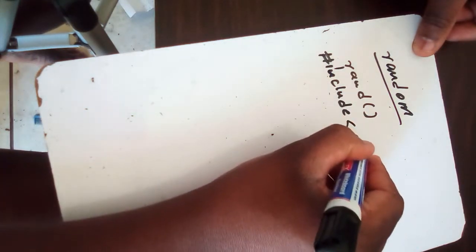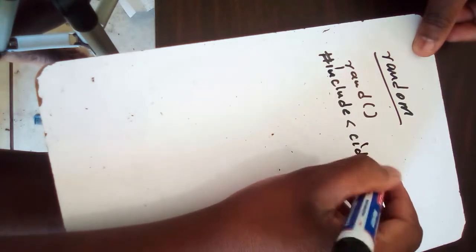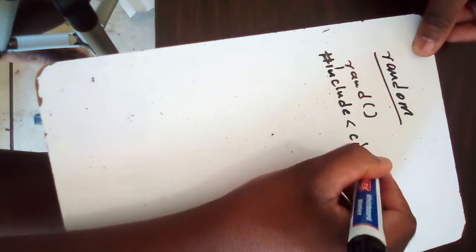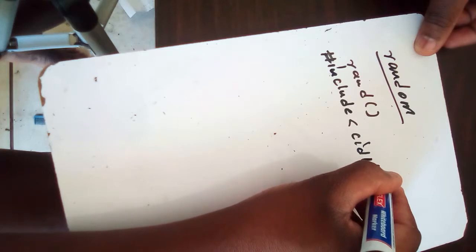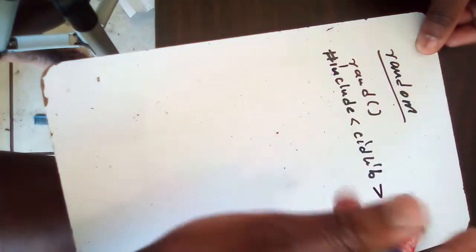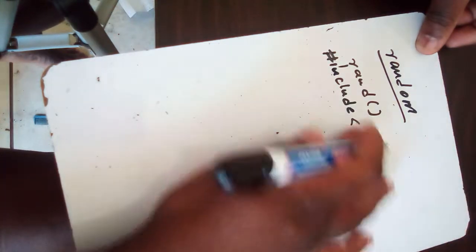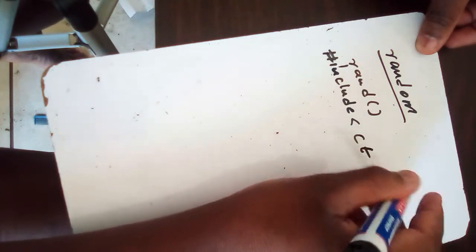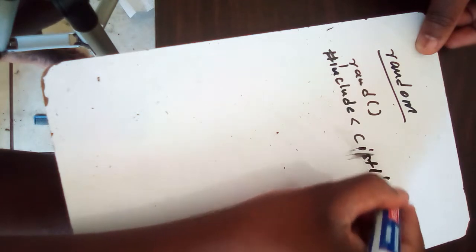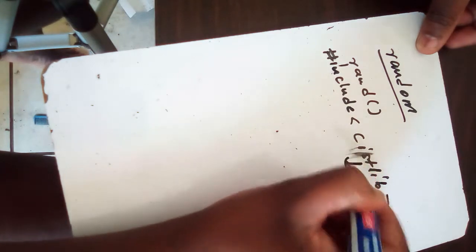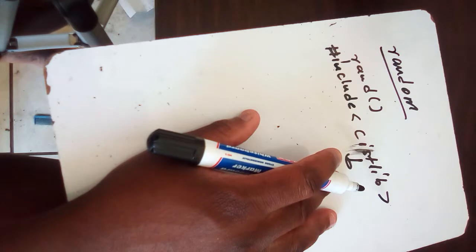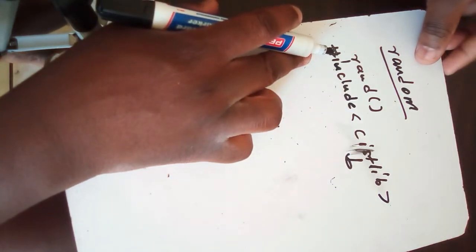If you are using functions for random, you need to use a header file called hash include cstdlib. I'm still gonna recheck this one, so we have to run into another header file name.